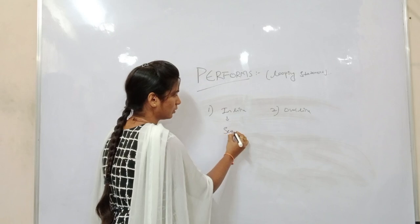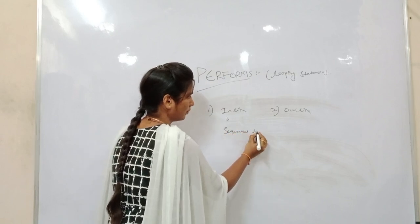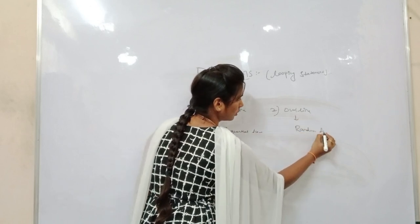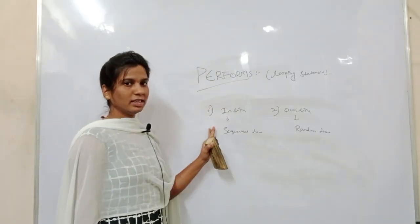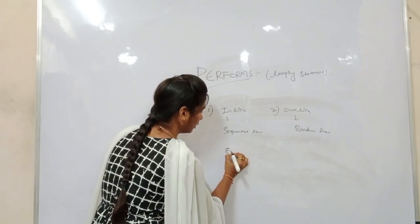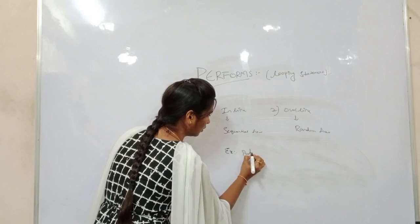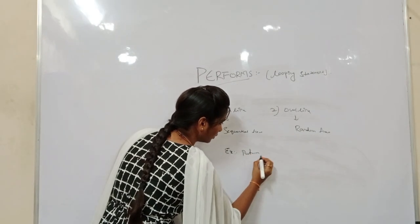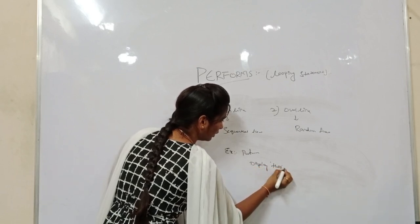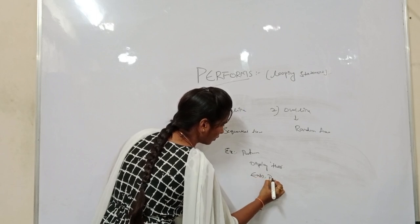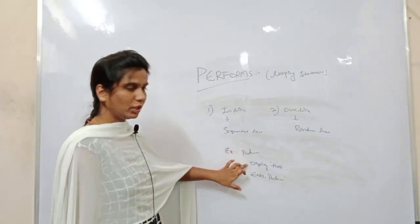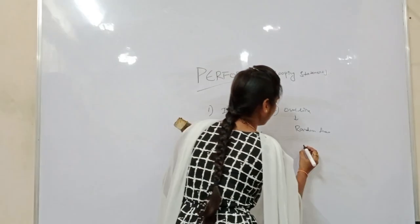We have two types of PERFORM: inline and outline. Inline is a sequential flow and outline is a random flow. In inline, the statements must be written between PERFORM and END-PERFORM. For example, PERFORM display hello END-PERFORM — here we are writing the executable statements between PERFORM and END-PERFORM.